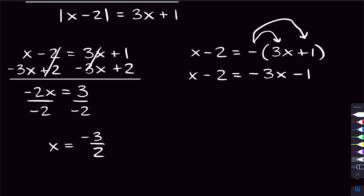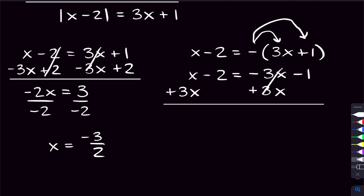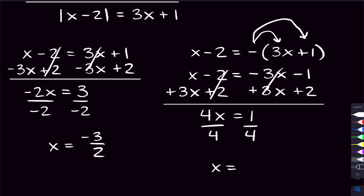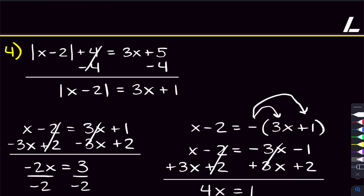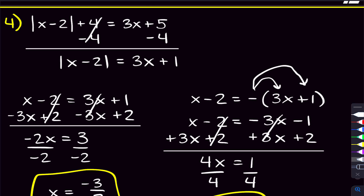For the right equation, we add 3x and add 2 on both sides. On the left we get 4x, and on the right we get negative 1 plus 2 equals positive 1. Dividing by 4 gives x equals 1 over 4. You might think these are your two solutions — but one of them won't actually work.